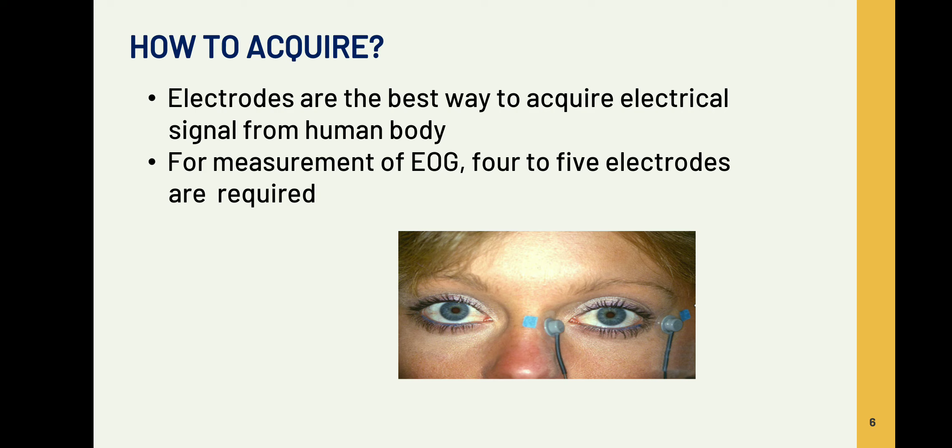How to acquire EOG? As in ECG, not only in EOG but also in ERG and EEG, we use electrodes because electrodes are the best way to acquire electrical signals from the human body. Here in EOG we have to place four to five electrodes.